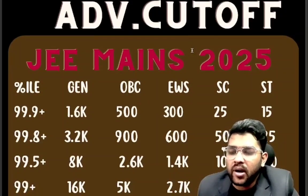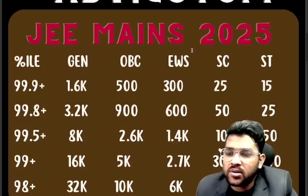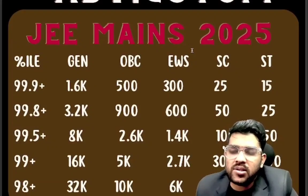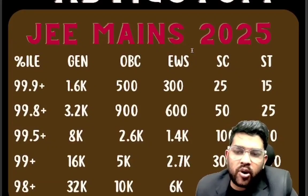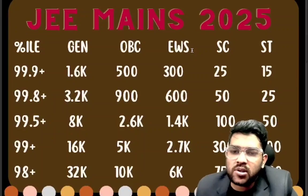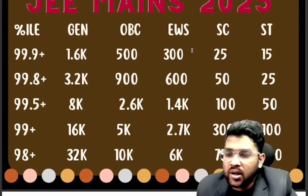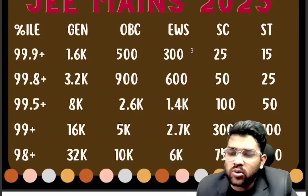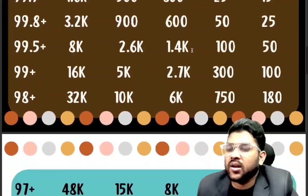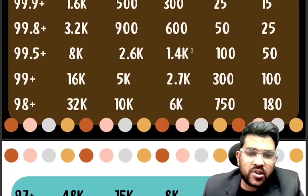For 99.5 percentile: general rank 8,000; OBC 2,600. For 99: general 16,000; OBC 5,000 — the last three columns are for EWS, SC, ST respectively. For 98: CRL 32,000 and OBC rank 10,000.